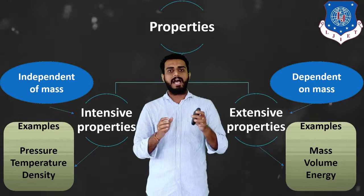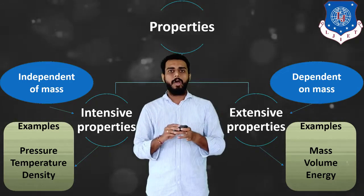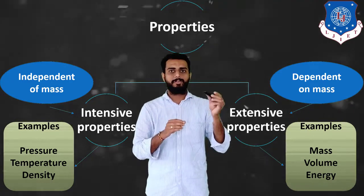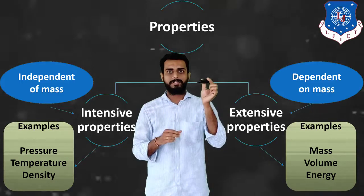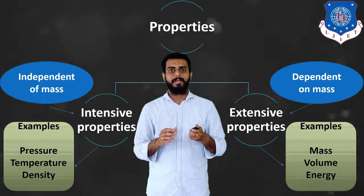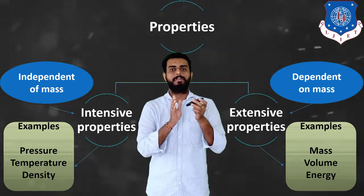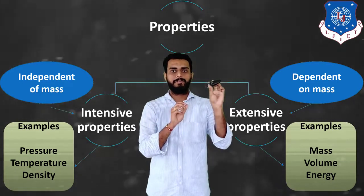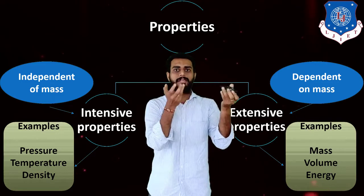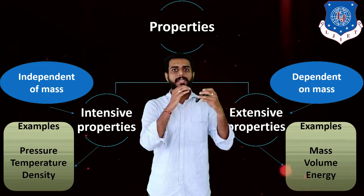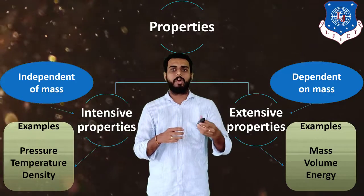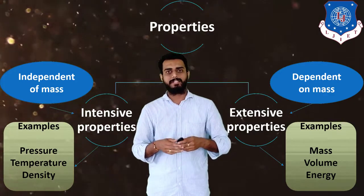These properties are dependent on mass. For example, I have two halves of the rod. If I join these two halves, the volume will increase. So if I am increasing the mass, the volume is also increasing. That is why it is called an extensive property.